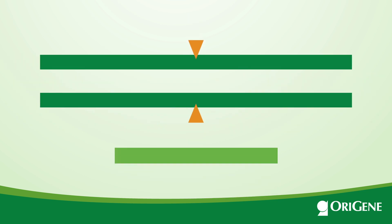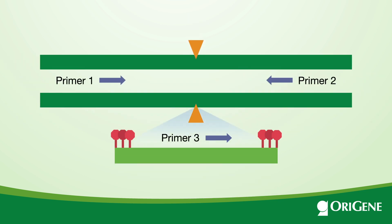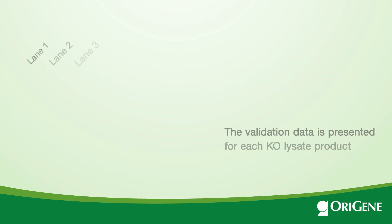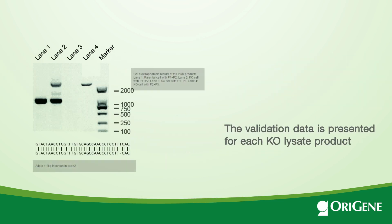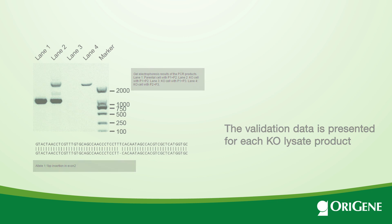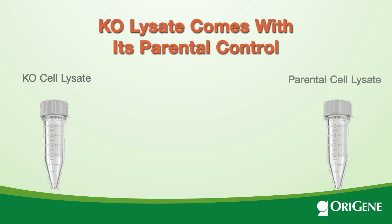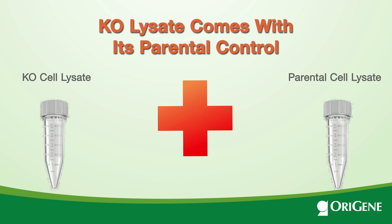All of the KO cell lines are validated at the genetic level using PCR followed by sequencing. The two alleles are either interrupted by indel or by insertion of the puromycin resistance cassette. The validation data is presented for each KO lysate product.